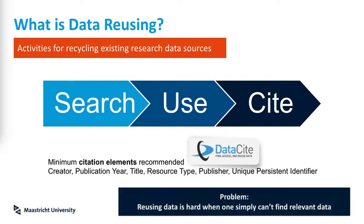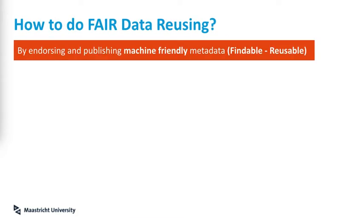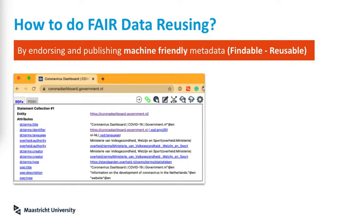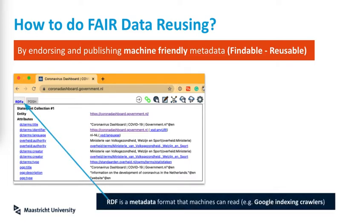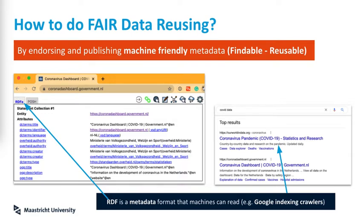The problem is clear: how can I reuse data if I cannot even find relevant data for my research? So how can FAIR help us with that? We have to endorse and publish machine-friendly metadata so that it is findable by search engines and can be reused by humans. Take, for instance, the Corona database of the Dutch government. In the platform, they have published the metadata in RDF — resource description framework — a format that machines can pick up, like the Google indexing crawlers. Therefore, it is findable by the search engine when you look for COVID data, and it also has a persistent identifier in the form of a URL.